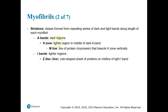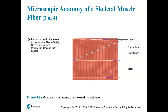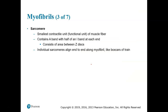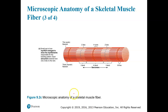Striations result from a repeating series of dark and light bands along the length of each myofibril. A bands are the dark regions. The H zone is a lighter region in the middle of the dark A band, and the M line is the line that bisects the H zone vertically. The I bands are the lighter regions and contain the Z disk, which is a coin-shaped sheet of proteins on the midline of the I band. The sarcomere is the smallest contracting unit of a muscle fiber — the area between one Z disk and the next.